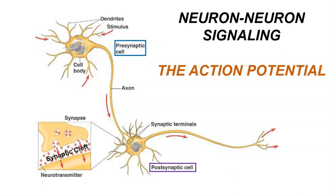Our focus will be on how neurotransmitters released from one neuron are used to signal a nearby neuron — signaling occurring between two neurons within the nervous system. The cell releasing the neurotransmitter is referred to as the presynaptic neuron or presynaptic cell, since it is found before the synapse. The postsynaptic cell or postsynaptic neuron is the neuron responding to the neurotransmitter being released from that presynaptic neuron.